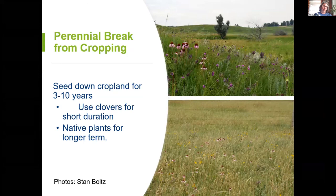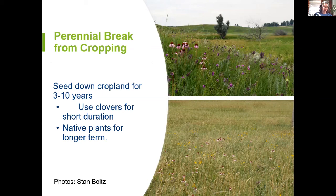Another option I discussed early on is managing a break from regular crops with a perennial break. You could seed down cropland for three to ten years — it depends on land ownership. If you own the land it's a lot easier to seed something down than if you're renting. Even in the short term, penciling out small areas to put in clover is valuable — even in an organic system it's a super green manure crop. I always say don't turn brown down, turn green under — use a green manure. Utilize that pollinator habitat in year three as a high-biomass nitrogen source. But native plants are best for the long term.